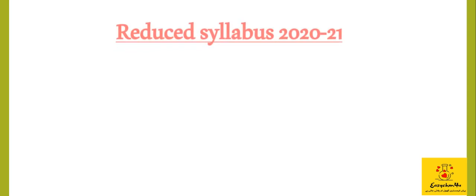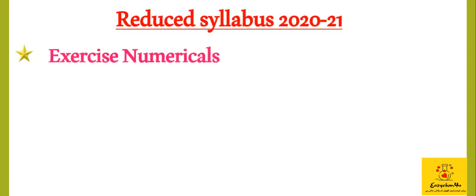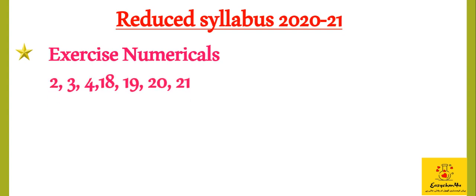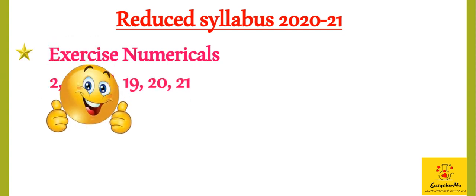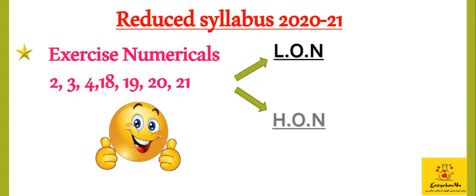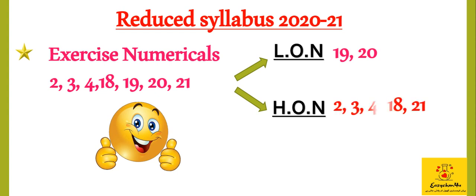Next are the exercise questions according to the reduced syllabus. Exercise numericals included are 2, 3, 4, 18, 19, 20 and 21. Dividing them into low order and high order numericals: 19 and 20 are low order, while 2, 3, 4, 18 and 21 are high order numericals.